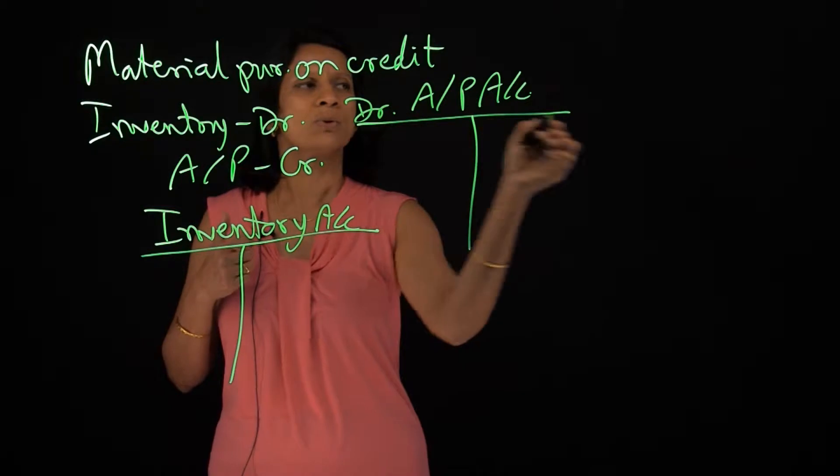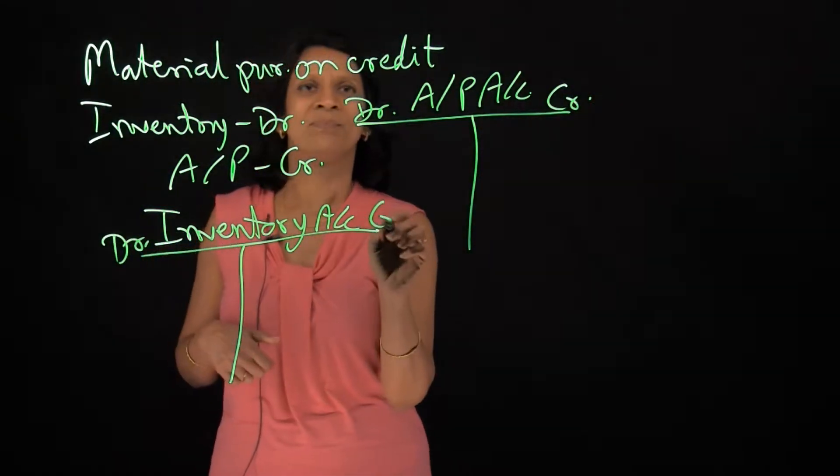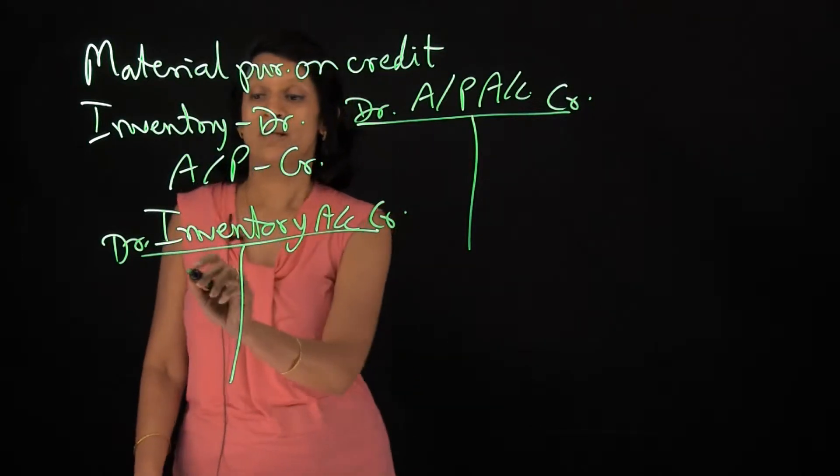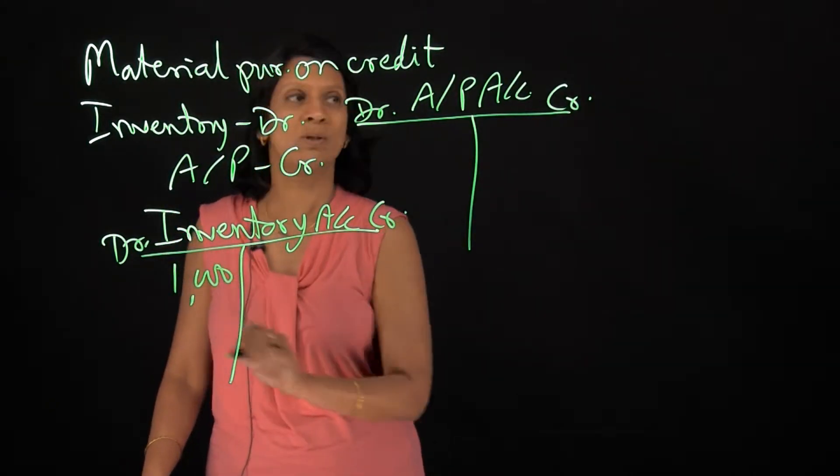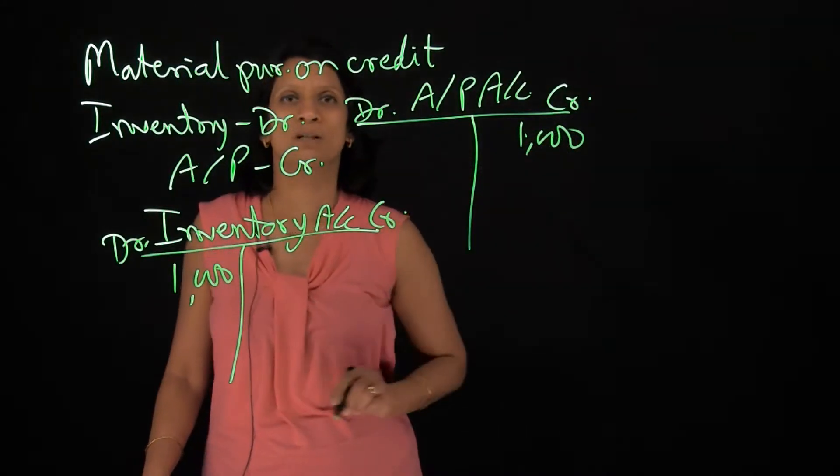All the T accounts, left side is debit and right side is credit. So what happened last time? We had purchased $1,000 worth inventory on credit. So I had credited accounts payable and debited inventory.